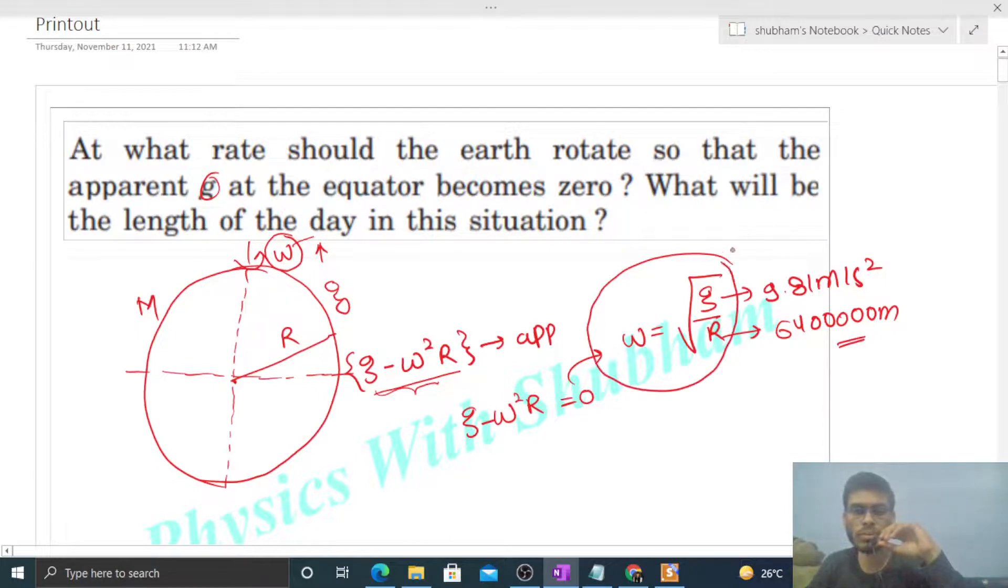Now how do we find the time period? Time period is simply 2π divided by omega. Once you got the value of omega, put that value here and we can find out the time period.